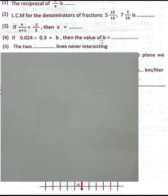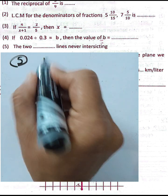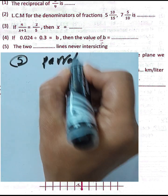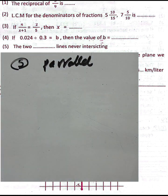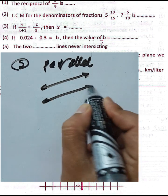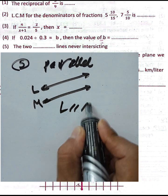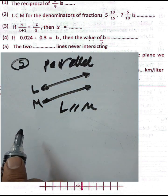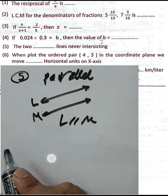Question number five: two parallel lines never intersect. The two parallel straight lines, such as line l and line m, are parallel and never intersecting.